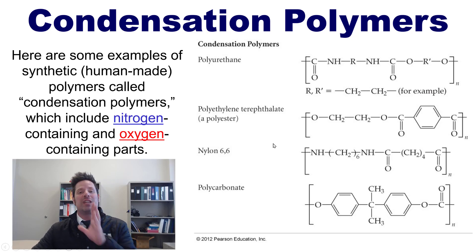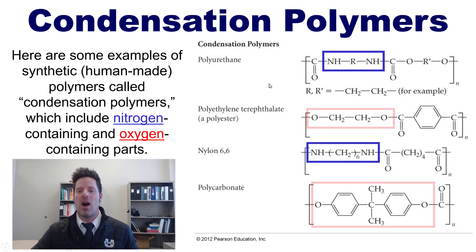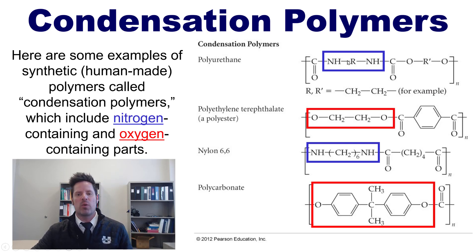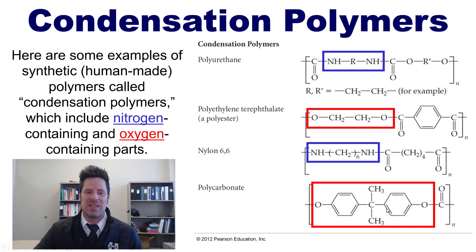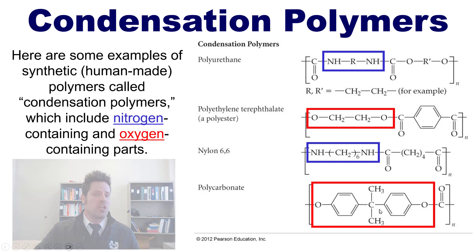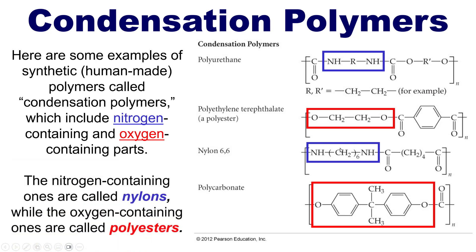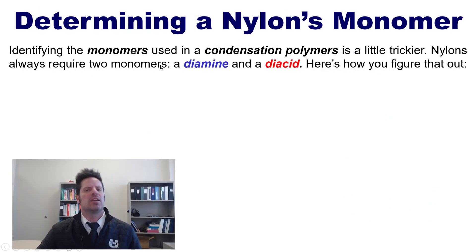Here are some examples of synthetic, human-made polymers called condensation polymers. Each contains either nitrogen-containing parts or oxygen-containing parts. I've highlighted regions with two NH groups with a carbon group in the middle — shown in blue boxes — or two oxygens with a carbonyl structure between them. The nitrogen-containing examples are called nylons, while the oxygen-containing ones are called polyesters.